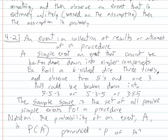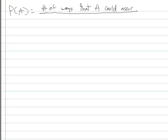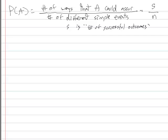We have a few basic ways of calculating probabilities. We can say the probability of an event is the number of ways that A could occur divided by the number of different simple events. We can call this S over N. The S typically stands for number of successful outcomes.